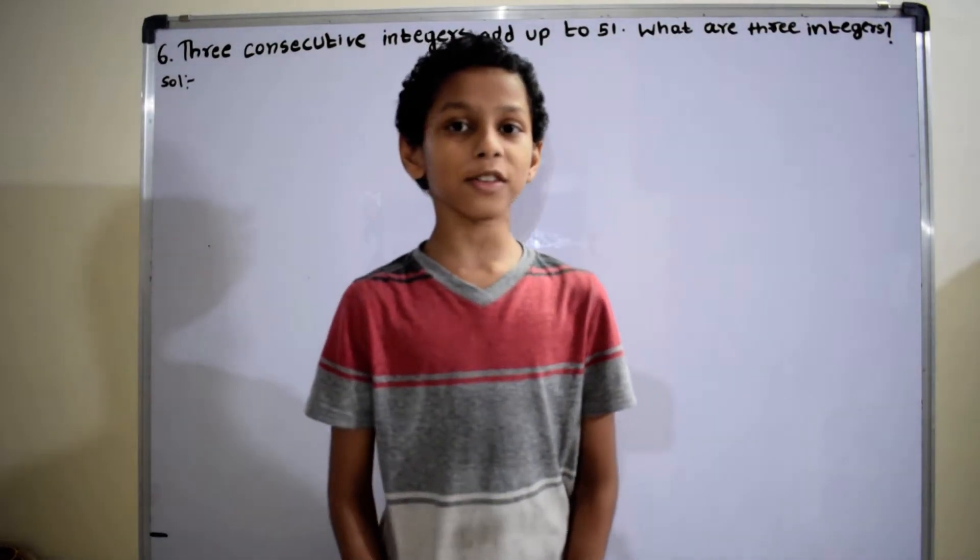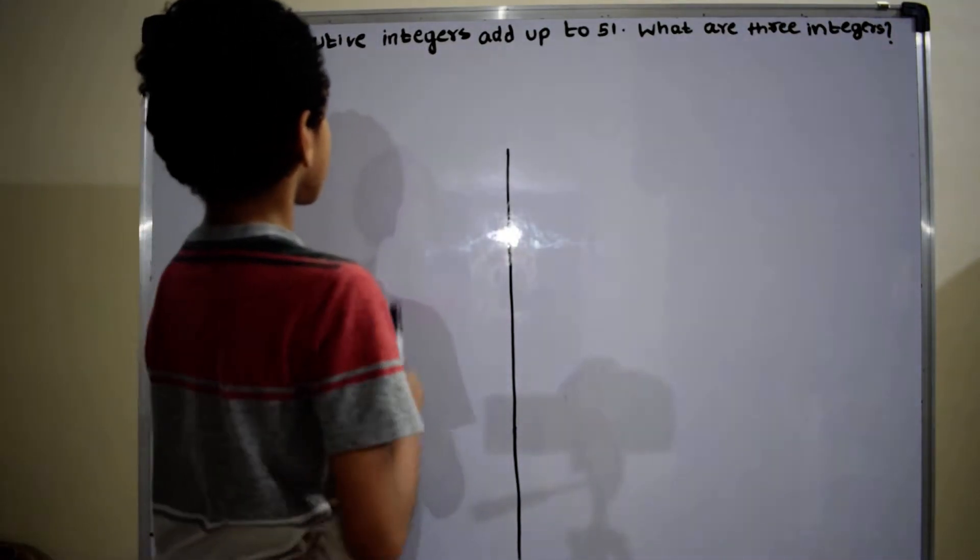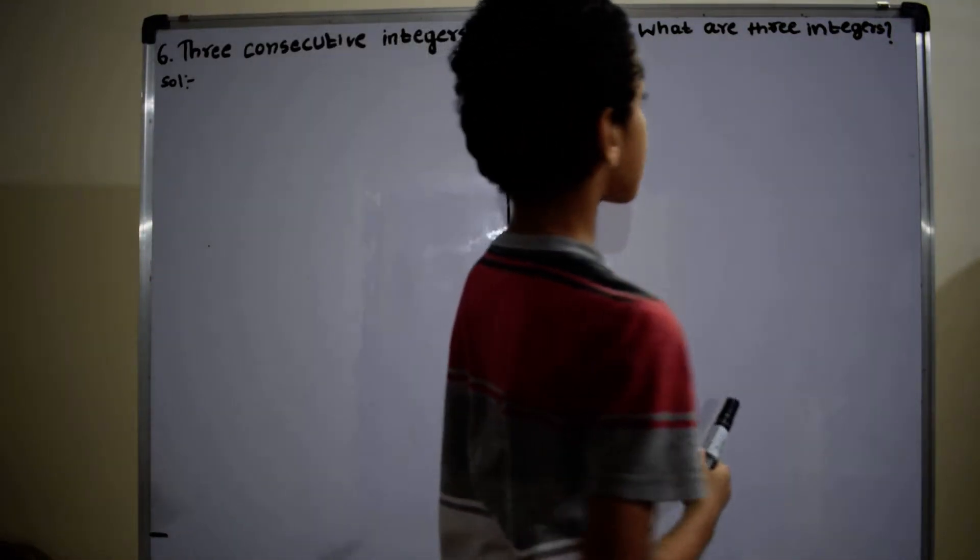Let's discuss the solution of the given problem. The problem is 3 consecutive integers add up to 51. What are these 3 integers?